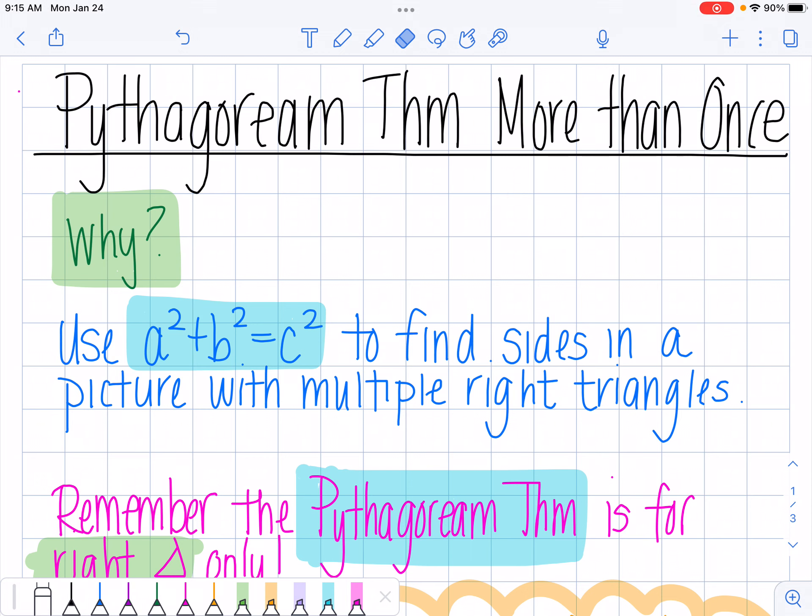So why do I have to know how to do this? Well, a lot of times we have right triangles that have more than one triangle in them, and we can use Pythagorean theorem more than one time to find the side that they're asking.